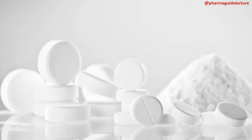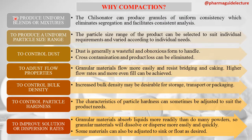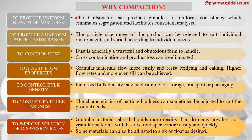Compaction is required for several reasons. First, to produce uniform blends or mixtures — the Chilsonator can produce granules of uniform consistency, eliminating segregation. Without compacts, powders with discrete particle sizes, shapes, and densities tend to separate during transport or handling due to differences in size, shape, and density.